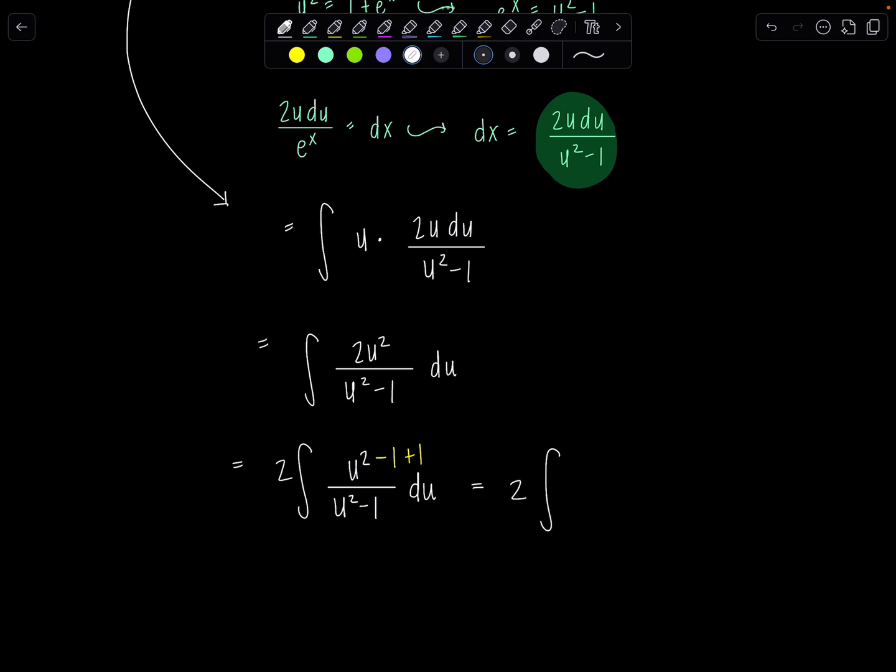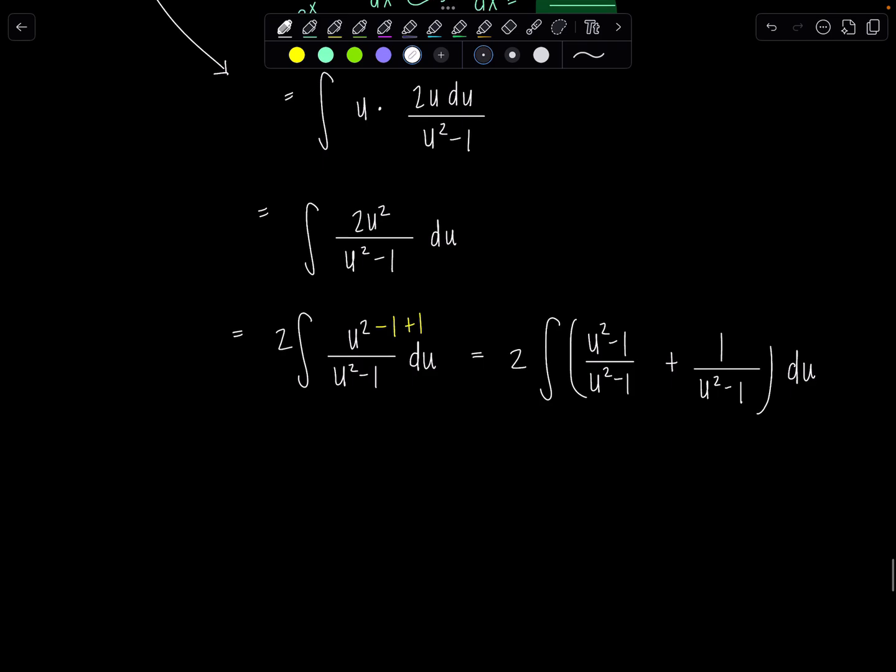That way you can cancel this u squared minus 1 with the u squared minus 1 in the denominator. So now we're going to rewrite the integrand as 2 times u squared minus 1 over u squared minus 1 plus 1 over u squared minus 1 du. This is going to be 2 times the integral, 1 plus 1 over u squared minus 1 du. And some of you might have just memorized the antiderivative of this quantity, so you can bypass doing the partial fraction decomposition.